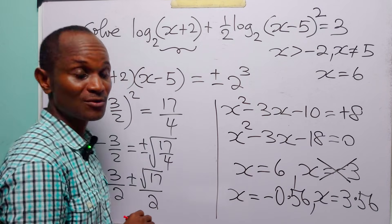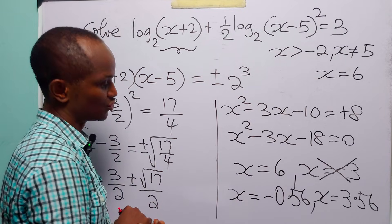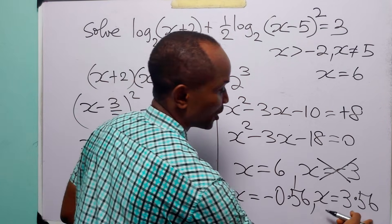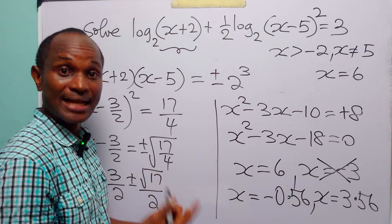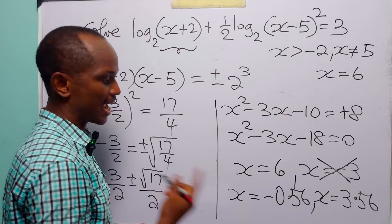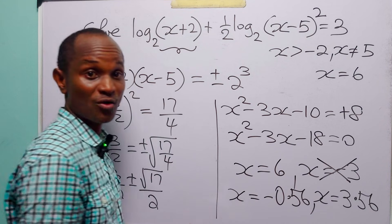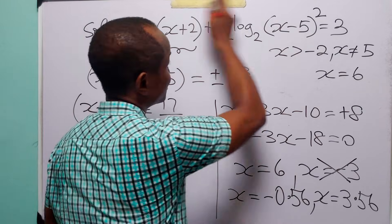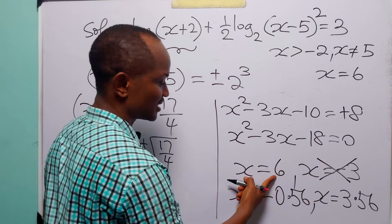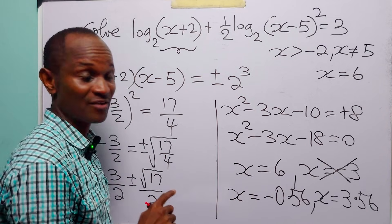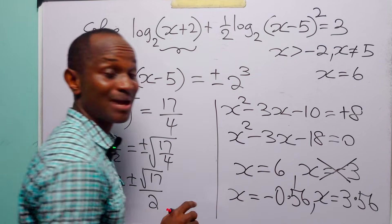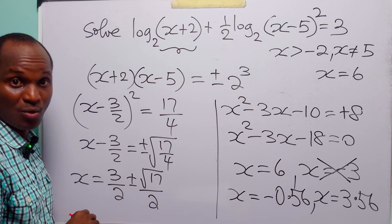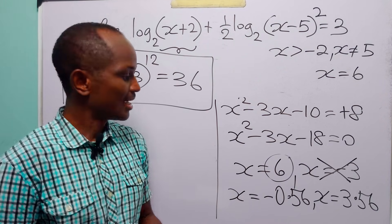Checking the restrictions: x must be greater than minus 2. So 6 is greater than minus 2, minus 0.56 is greater than minus 2, and 3.56 is greater than minus 2. We also know x must not be equal to 5, and none of the three values equal 5. So the three values satisfying the equation are x equals 6, approximately x equals minus 0.56, or exact values x equals 3 over 2 plus or minus root 17 over 2.